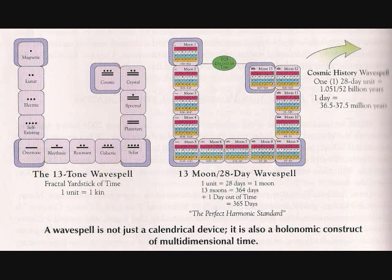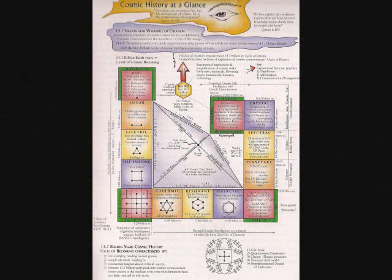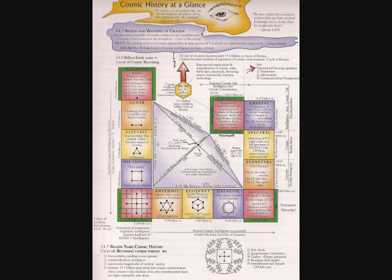First, this 13.7 billion year wave spell represents the cycle of becoming. From the point of view of cosmic history, at this instant, this 13.7 billion year cycle is having a massive universal climax.